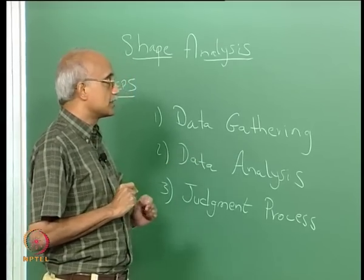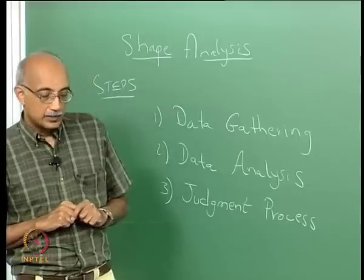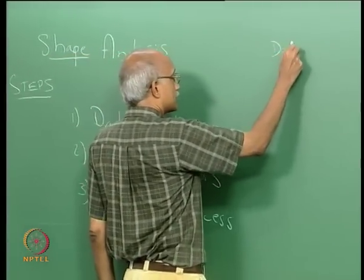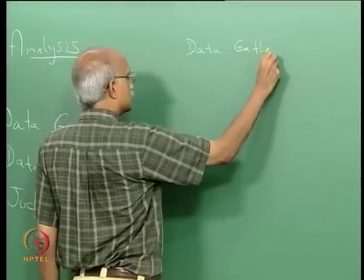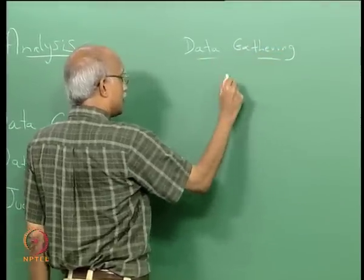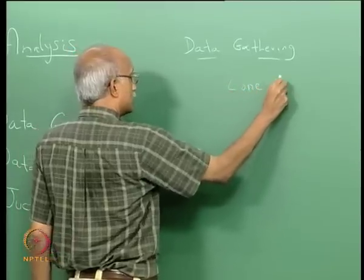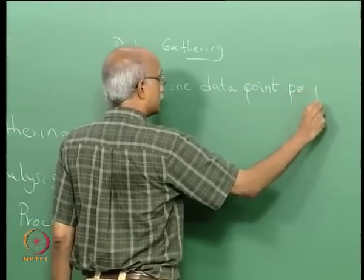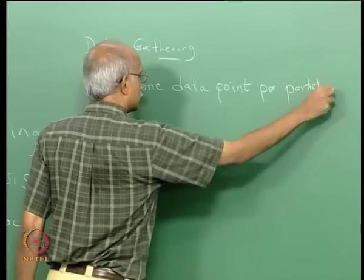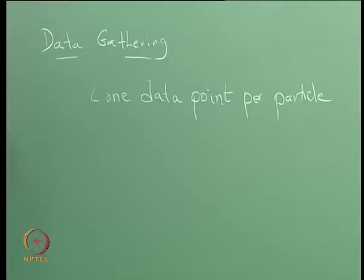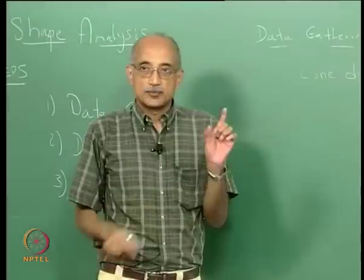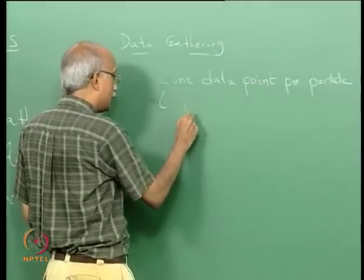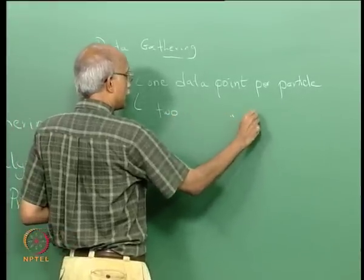There are various modes of gathering data for shape analysis. It can be as simple as one data point per particle — for example, just looking at the largest dimension and representing the shape by that. Or more commonly, it could be two data points per particle: you find the largest dimension and another dimension perpendicular to it, representing the longest dimension as L and the transverse dimension as B, and taking the ratio L over B as an elongation ratio.